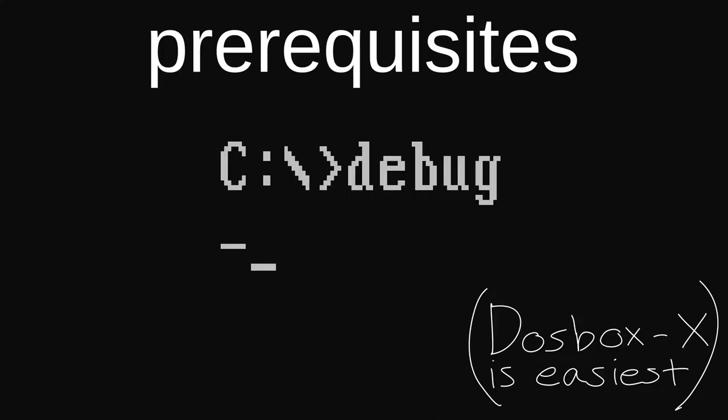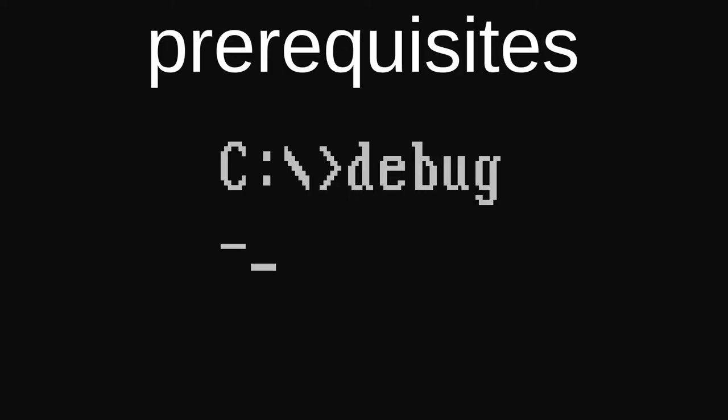You can download a binary package from the DOSBoxX website if one is available for your operating system, or you can install it from your operating system's package manager. The debug utility has had several changes over the many years it's been in use, and different versions may have small differences in their interfaces. This demonstration is fully tested in the debug utility provided in MS-DOS 6.22, FreeDOS, and DOSBoxX. With the DOS environment prepared, we're ready to start using debug.